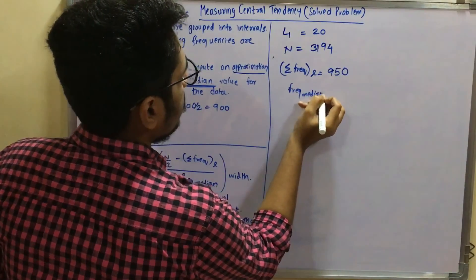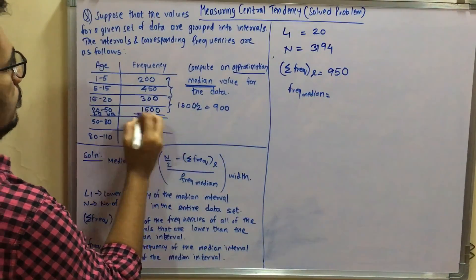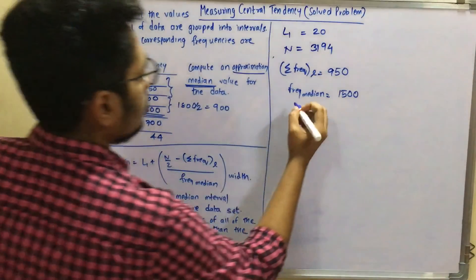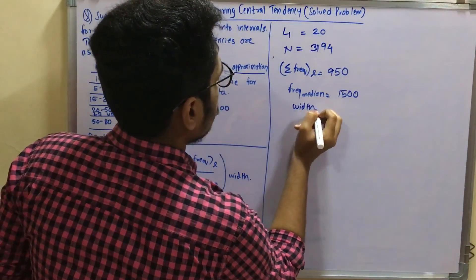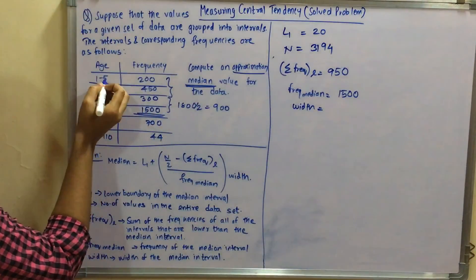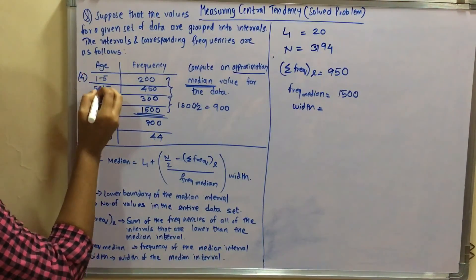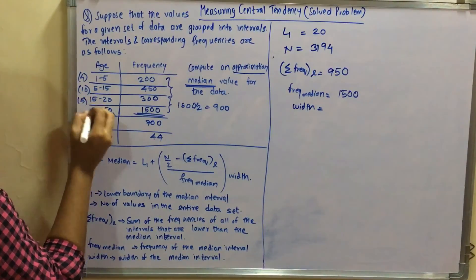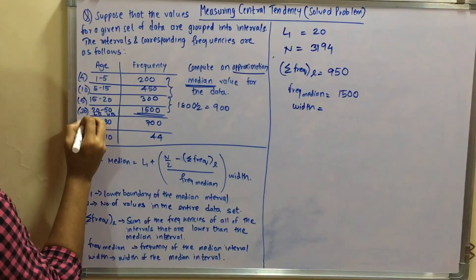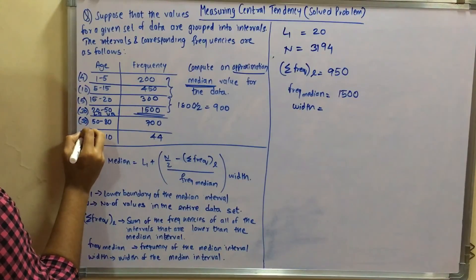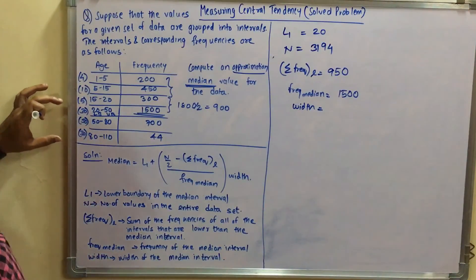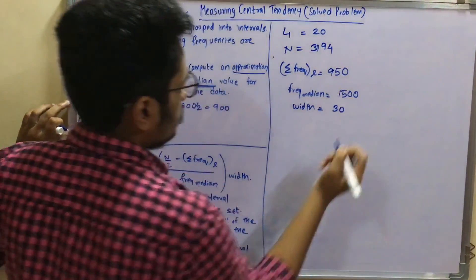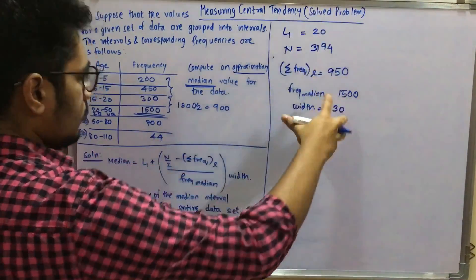The frequency of the median interval is 1500. Next, we calculate the width by subtracting the lower boundary from the upper boundary for each interval. The widths are: 4, 10, 5, 30, 30, 30, and 30. The width of our median interval is 30.